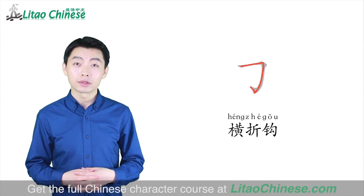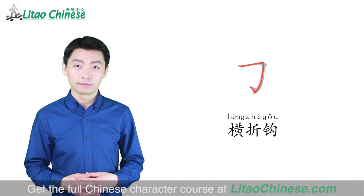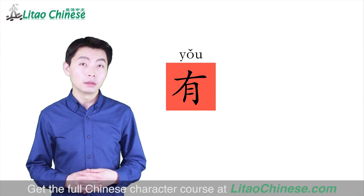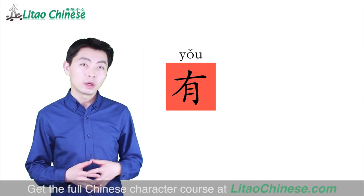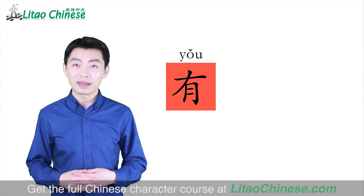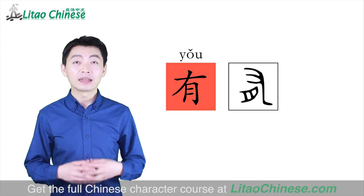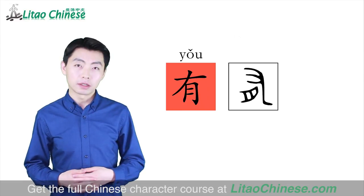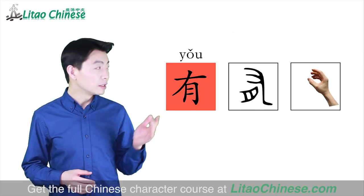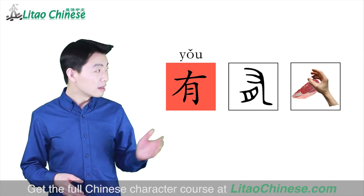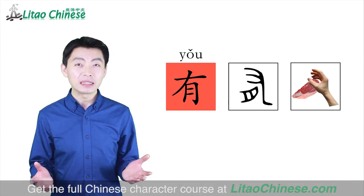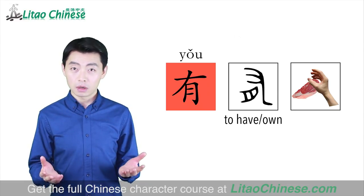Let's look at some characters which have this compound stroke 横折勾. This character is 有. The meaning of 有 is not related to the moon, even though you can find 月 in it. The ancient written form can explain why. The upper part represents a hand. The lower part is not the moon — actually, it represents a piece of meat. This character was made by drawing a hand holding a piece of meat to indicate the meaning of to have or to own.